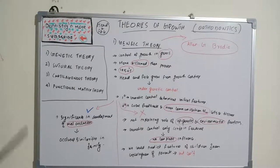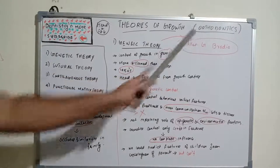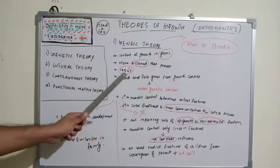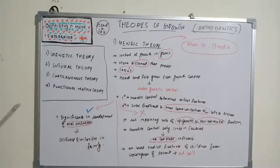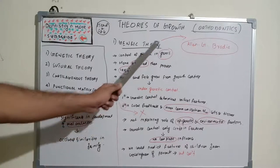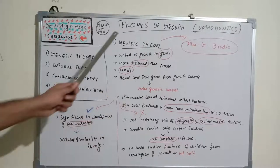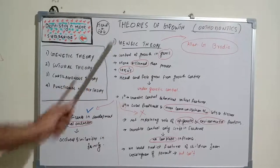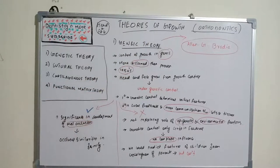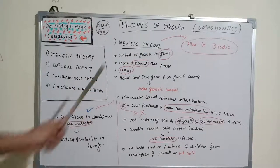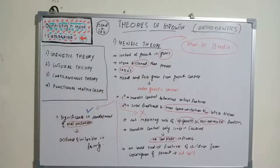The first theory is genetic theory, given by Alan G. Brodie in the 1950s. According to this theory, growth is controlled by genes, as the name suggests. It is more of an assumed theory than a proven one — there is no proof for this theory.